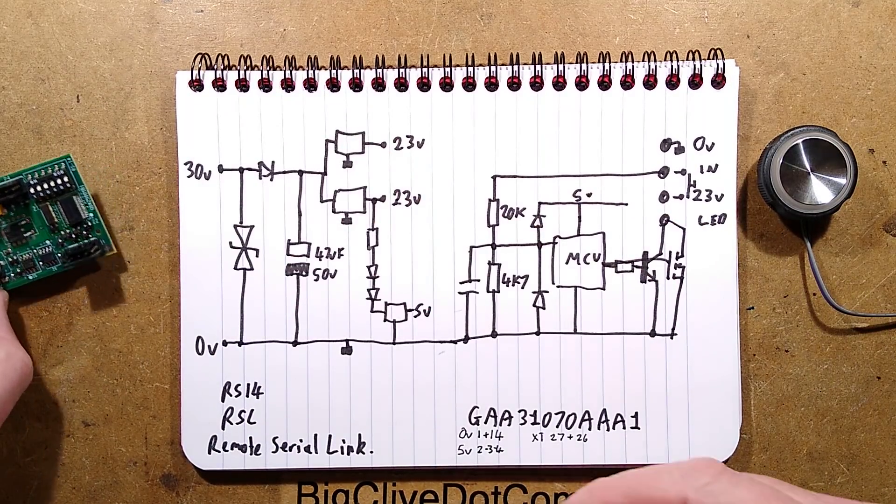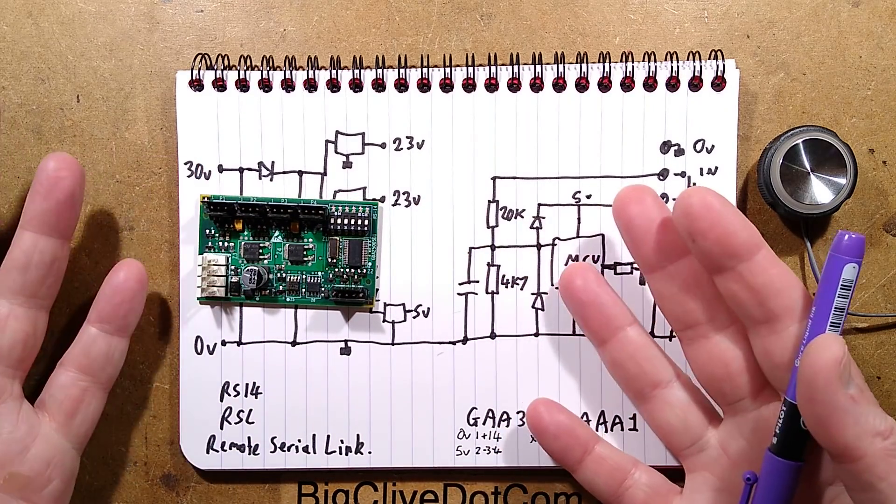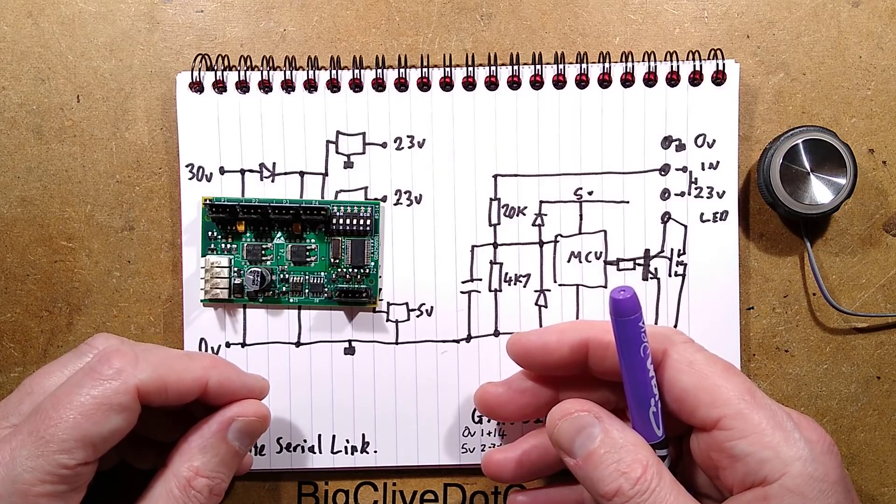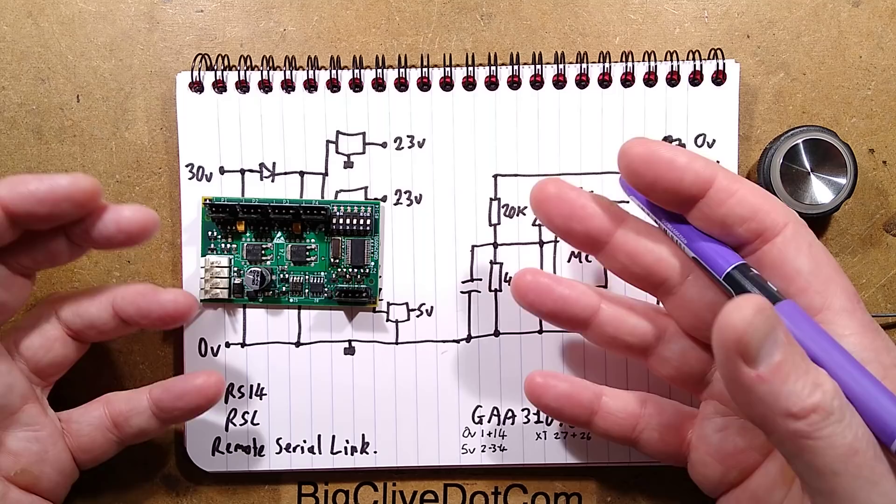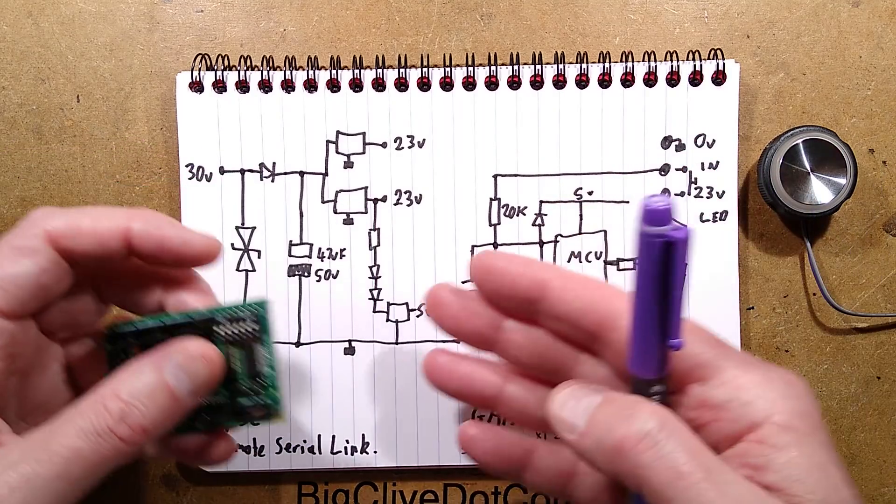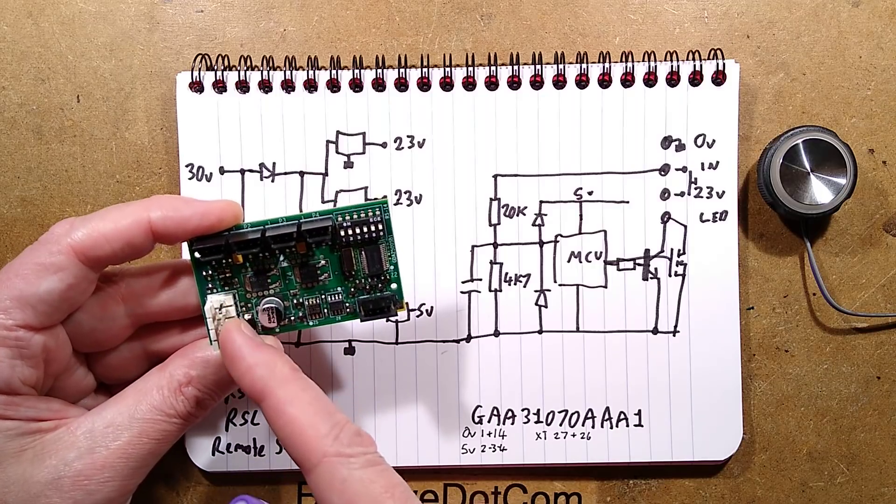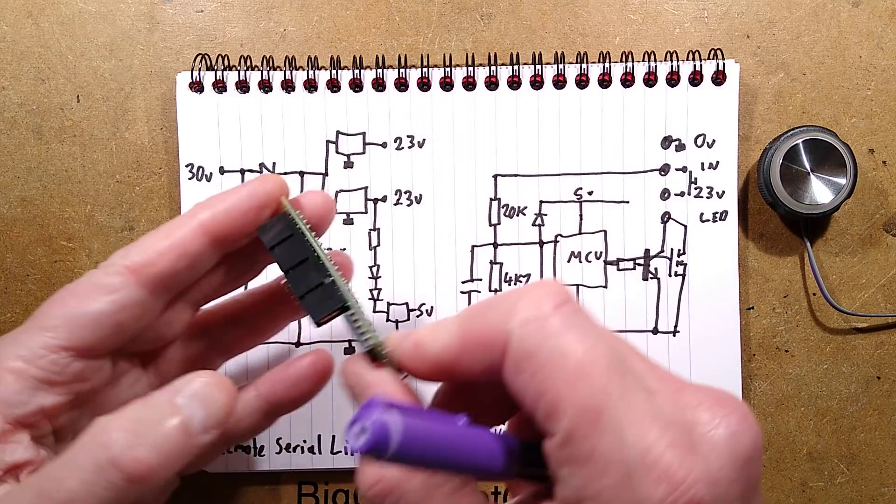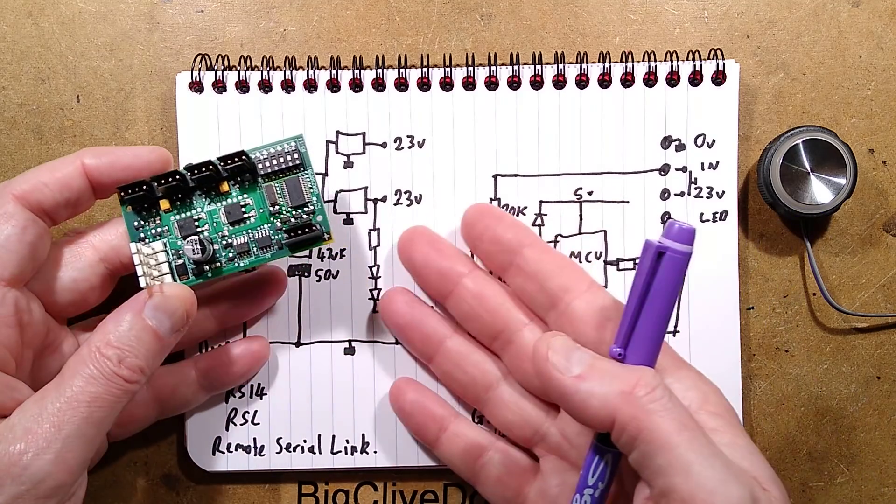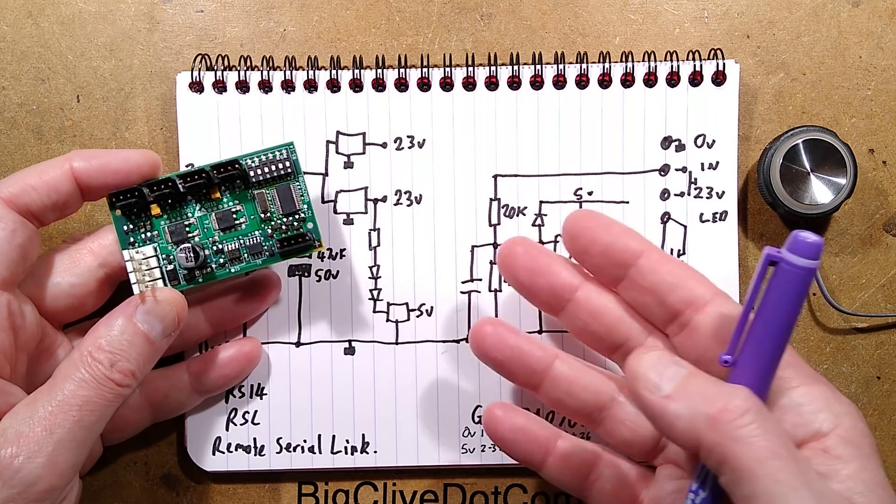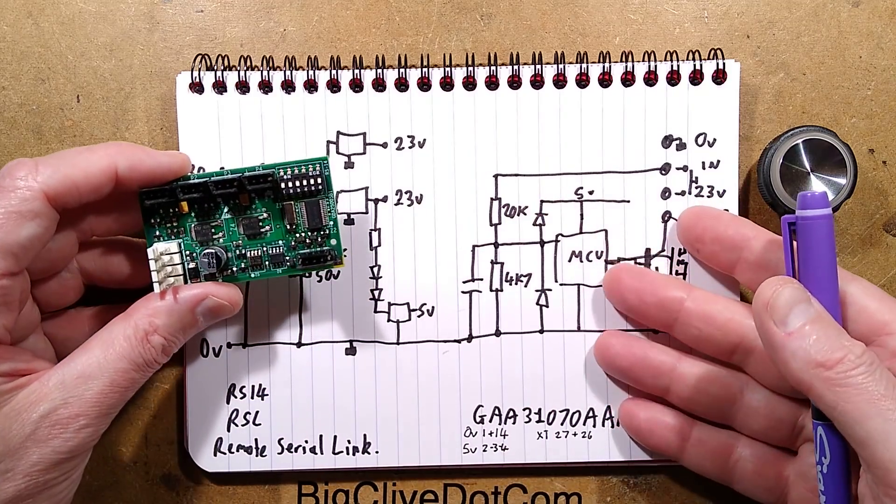I'm so used to RS485, even bi-directional like RDM remote device management of lighting equipment. It just uses a bi-directional RS485 interface. I'm not sure why they've chosen to go with their own proprietary standard. It's not like when this was designed in 2003 that CAN-BUS or RS485 wasn't established by then.